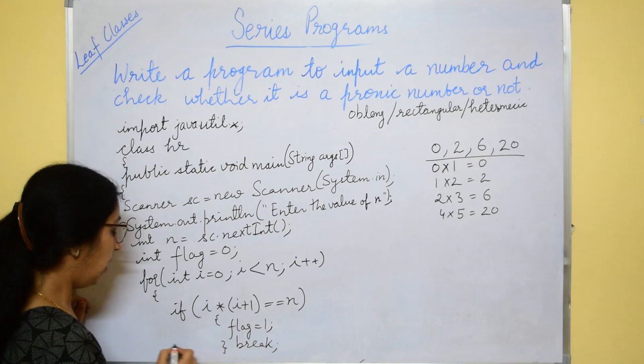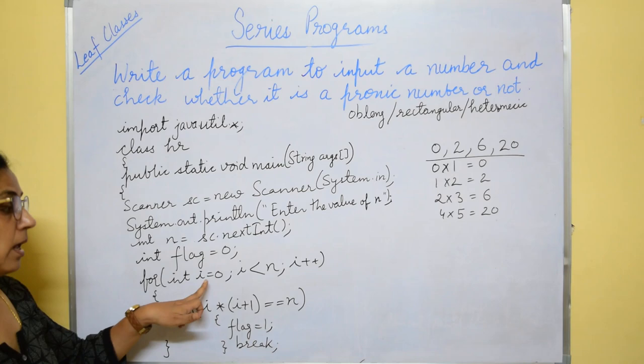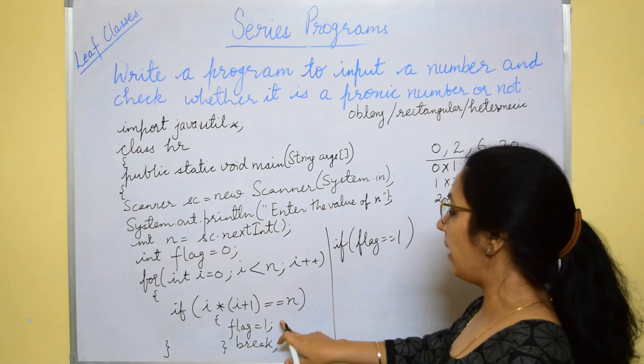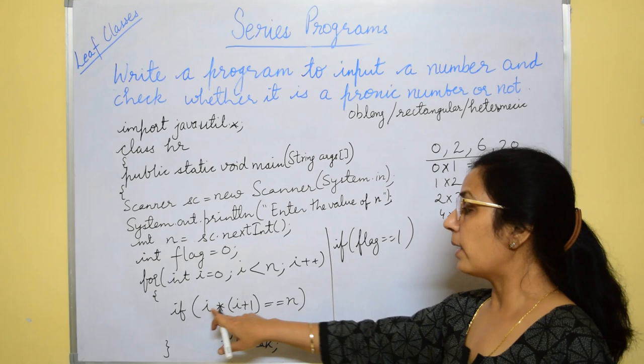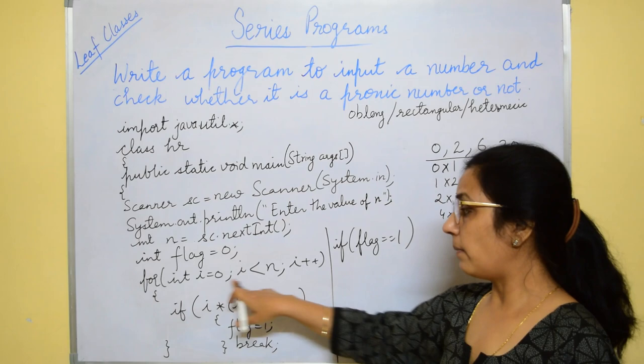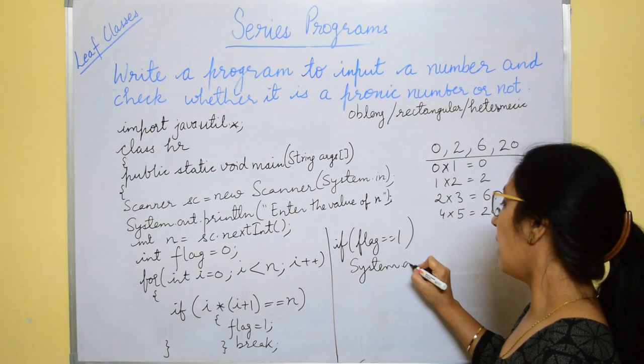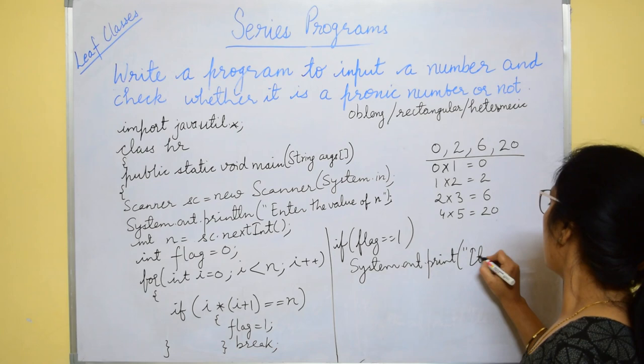And if not, then loop continues till less than n. After that you will check if flag is equals to 1, when this condition is satisfied, meaning two consecutive numbers product is n, that means the definition of pranic number is satisfied, so you will print it's a pranic number.